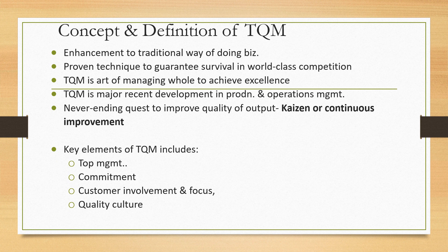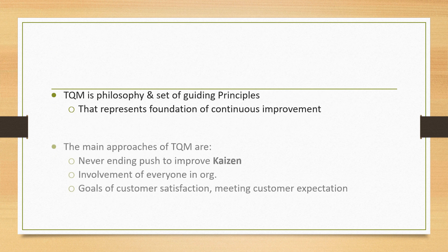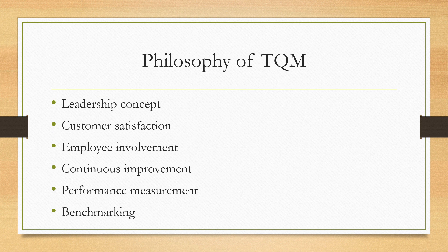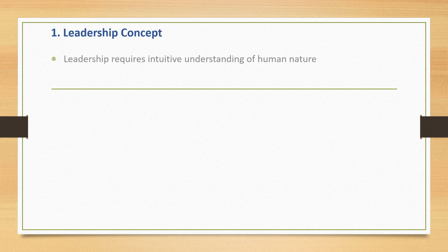Some key elements of TQM include top management commitment, customer involvement and focus, and quality culture. TQM is a philosophy and set of guiding principles that represent the foundation of continuous improvement. The main approaches of TQM are: a never-ending push to improve (Kaizen), involvement of everyone in the organization, and goals of customer satisfaction. The philosophy of TQM includes leadership, customer satisfaction, employee involvement, continuous improvement, performance measurement, and benchmarking.